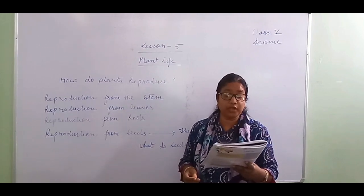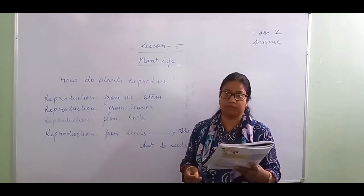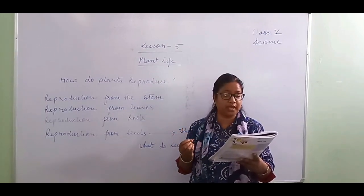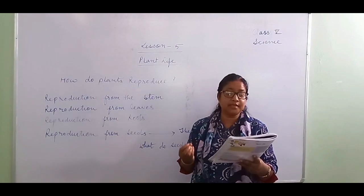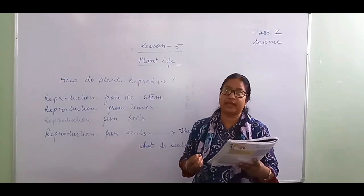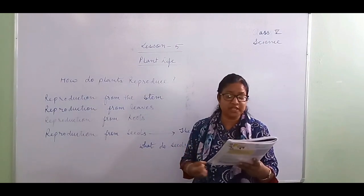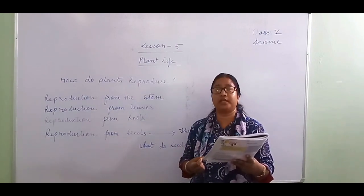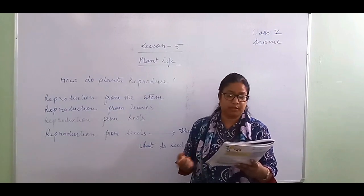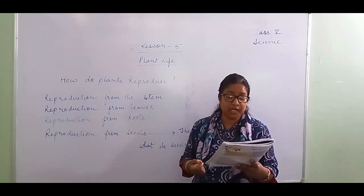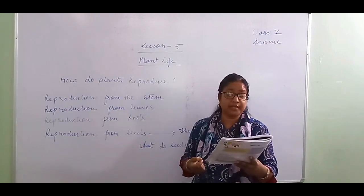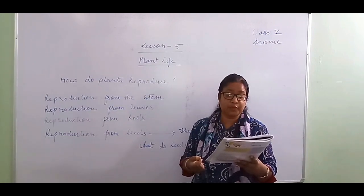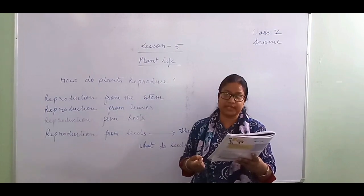The onion is a bulb — this is an underground stem with fleshy leaves. New plants grow from onion buds. Sometimes farmers and gardeners grow new plants from pieces of stem.